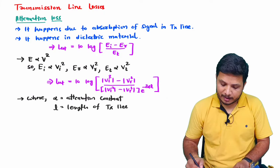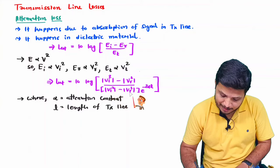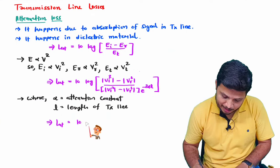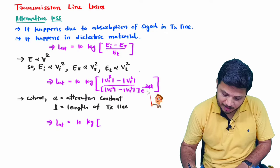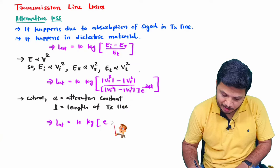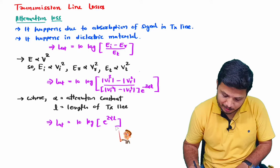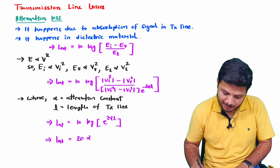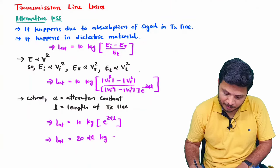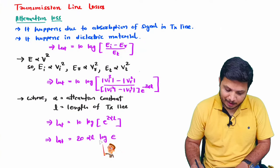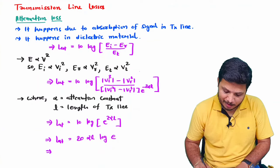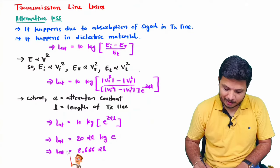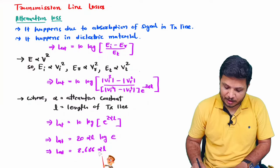Simplifying further, this term cancels in numerator and denominator, giving 10 log of e to the power 2 alpha L. Bringing 2 alpha L to the front: attenuation loss equals 20 alpha L times log of e. Calculating this gives attenuation loss equals 8.686 alpha L. This is the basic formula of attenuation loss.